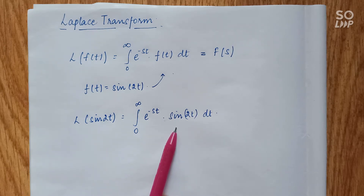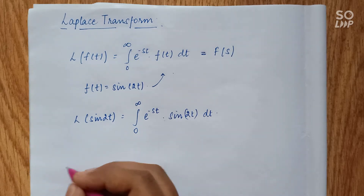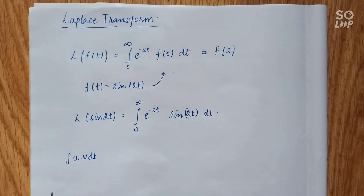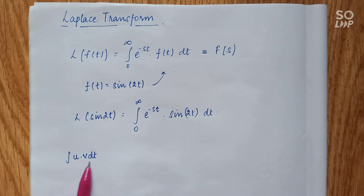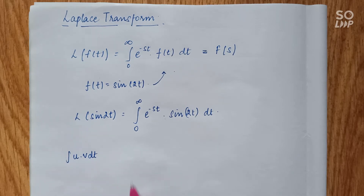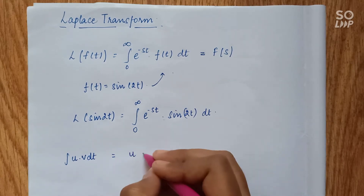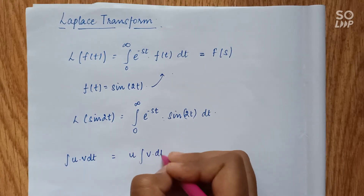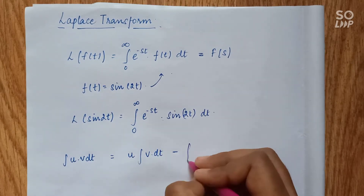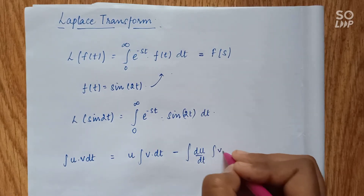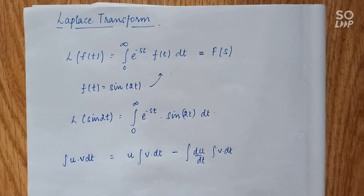We can see there are two different functions and we need to integrate them, so we can use the integration by parts method. By parts states that for an integration of u times v dt, where u and v are separate functions in terms of t, the integration can be written as u times the integration of v, minus the integration of the differentiation of u times the integration of v.